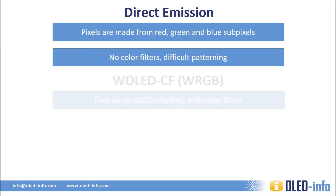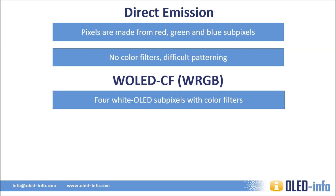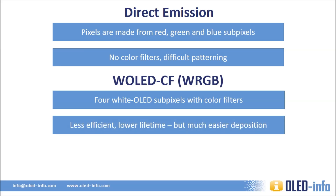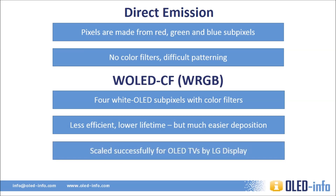The alternative design uses white sub-pixels with color filters on top to create the colors. This popular design is called WRGB, as it uses four sub-pixels with red, green, and blue color filters. The last sub-pixel does not have a filter and emits white light, used to efficiently boost brightness. WRGB panels are less efficient than direct emission panels, as a large portion of the light is blocked by the filters, and it lowers the effective lifetime because the blue color, which has the lowest lifetime of all materials, is always driven. However, WRGB panels are easier to deposit and can be scaled to larger substrates more easily. It's clear that LG Display managed to scale up and mass-produce large WRGB OLED panels at high yields, while Samsung failed at their attempt in 2013 to do the same with direct emission panels.